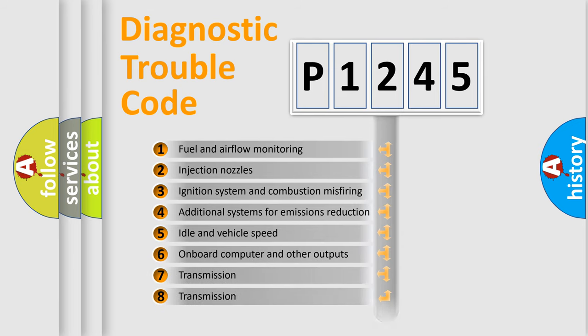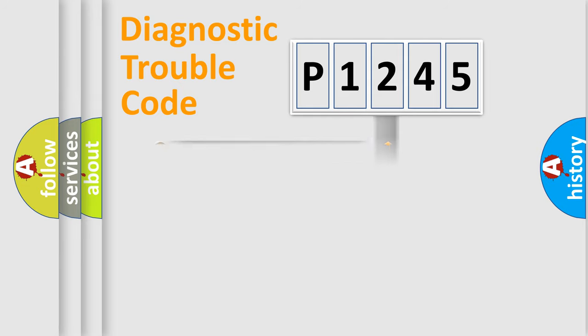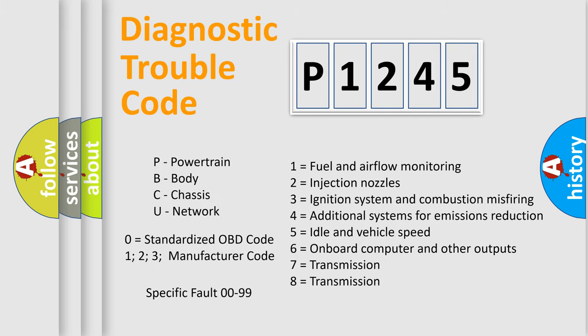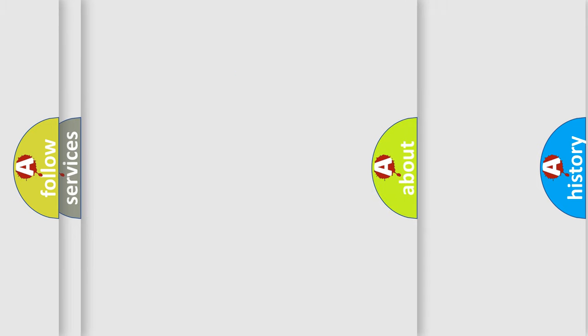The distribution shown is valid only for the standardized DTC code. Only the last two characters define the specific fault of the group. Let's not forget that such a division is valid only if the second character code is expressed by the number zero.